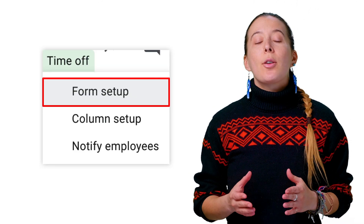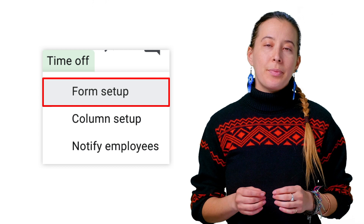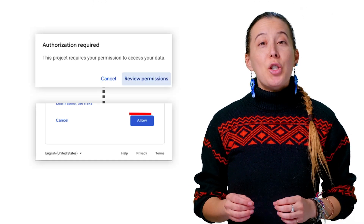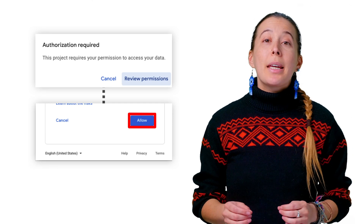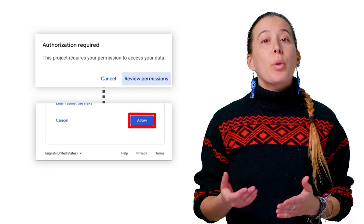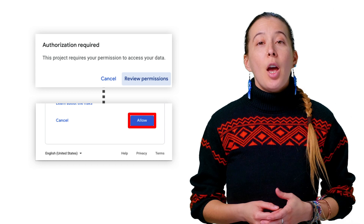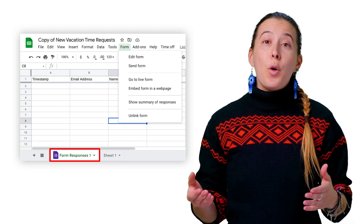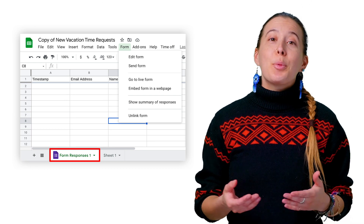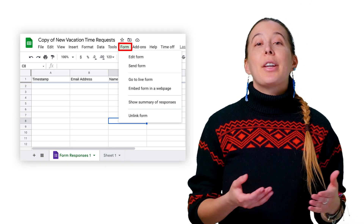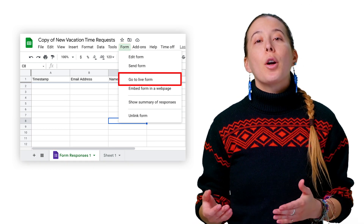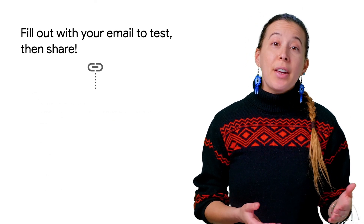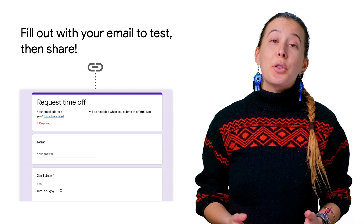You will see a custom menu called Time Off. Click it, then Form Setup. In your sheet, a dialog box will appear and tell you that the script requires authorization. Read and grant permissions. Once the form setup has finished running, you will see your spreadsheet now has a vacation time request form linked to it. You can share this form with your staff and their responses will arrive in your sheet.